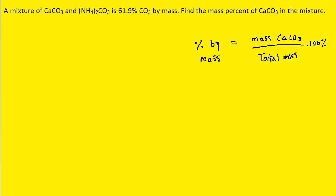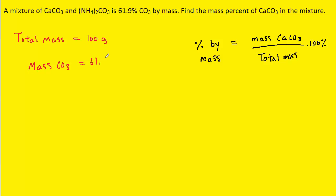What we're going to do is assume that the total mass is 100 grams. If the total mass is 100 grams and 61.9% is carbonate by mass, then we know that the mass of carbonate must equal 61.9 grams. So that's another of our known values.